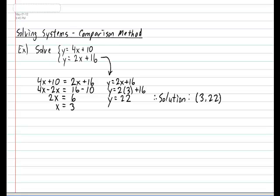Therefore, the solution to the system is 3 and 22. This means that the two lines, y equals 4x plus 10 and y equals 2x plus 16, will intersect at each other at the coordinate 3 and 22. As you can see, the comparison method is a very easy technique to use. So I think it's time for you to try one on your own.